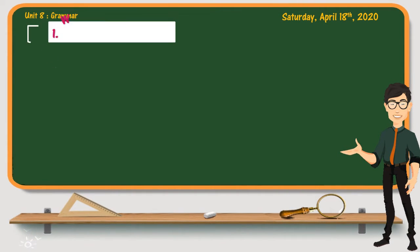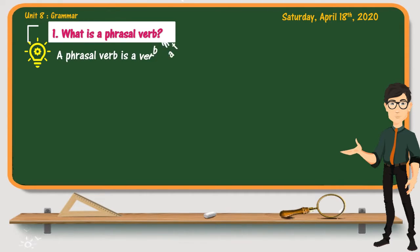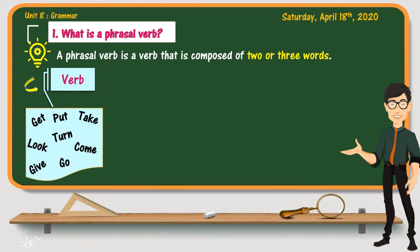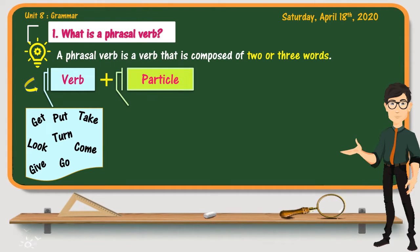Now that you have seen examples, we can define a phrasal verb as a verb that is composed of two or three words. The first word is usually a verb — like put, get, take, go, come, give, look, and many other examples — plus a particle.